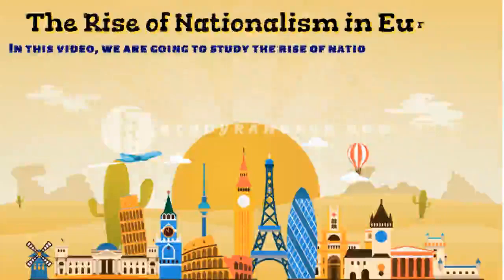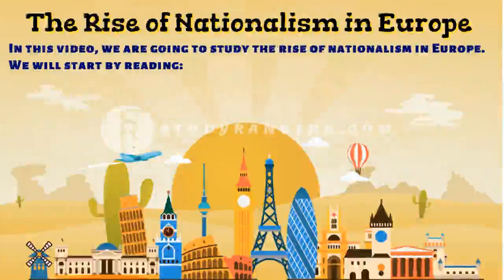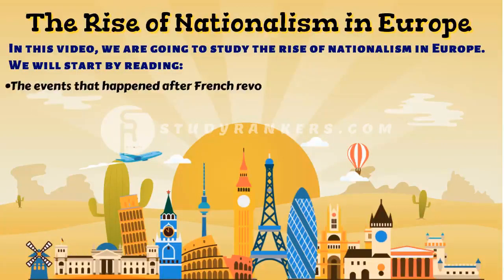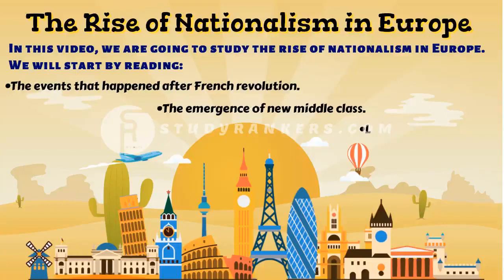Hi, in this video we are going to study the rise of nationalism in Europe. We will start by reading the end of the French Revolution and then we will move towards the making of national states in Europe. We are focusing on the events that happened after the French Revolution and the emergence of the new middle class. We will also talk about liberal nationalism. So let us start.